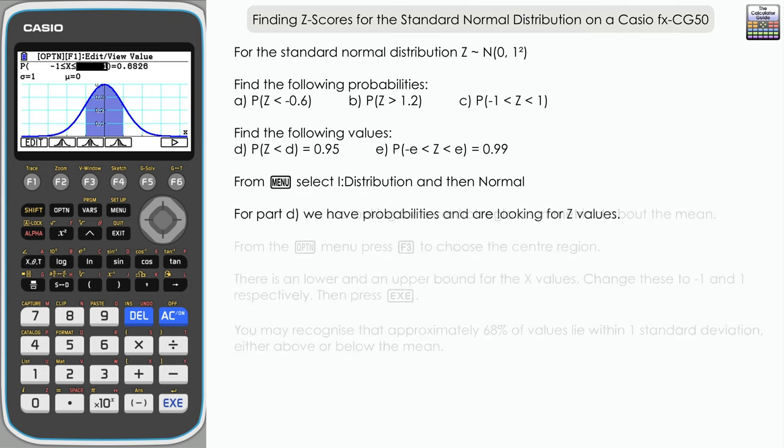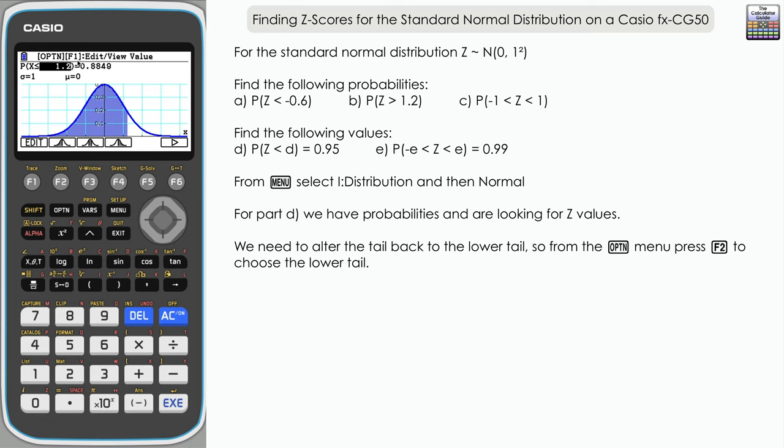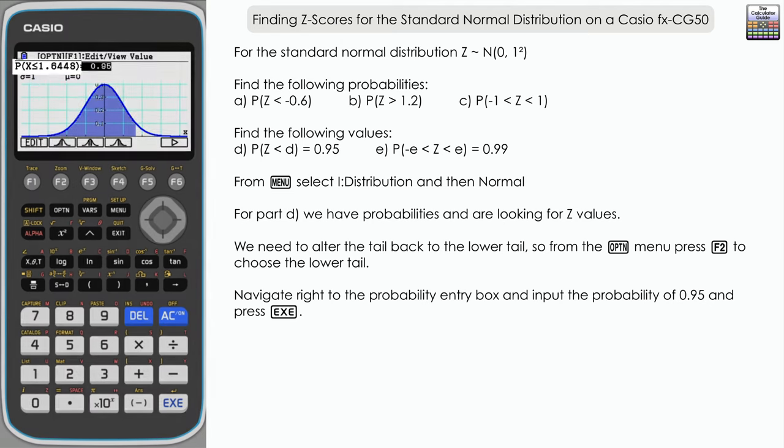Moving on to part D. Now we're looking for Z is less than D, which is some value we need to find, and the probability of that equaling 0.95. We're still going to stick with the graph part of distribution mode, but we do need to alter the tail back to the lower tail. So press F2, and this time we're going to change the probability. Navigate right to the probability there, and we're going to change that to the value for part D, 0.95, then execute.